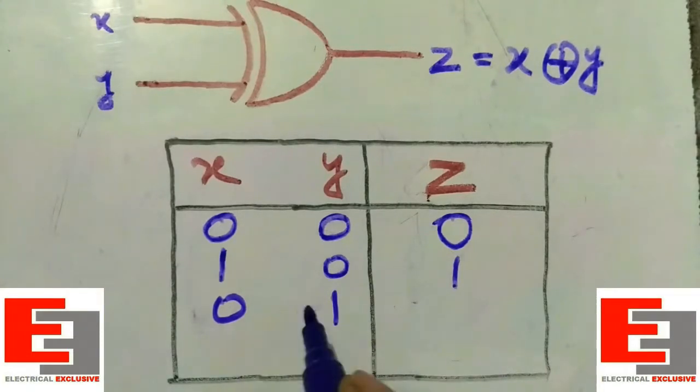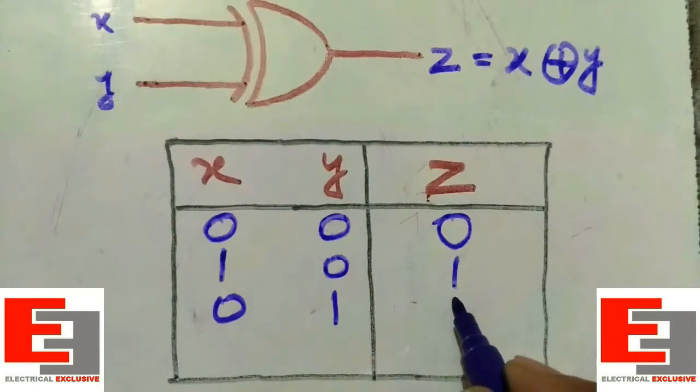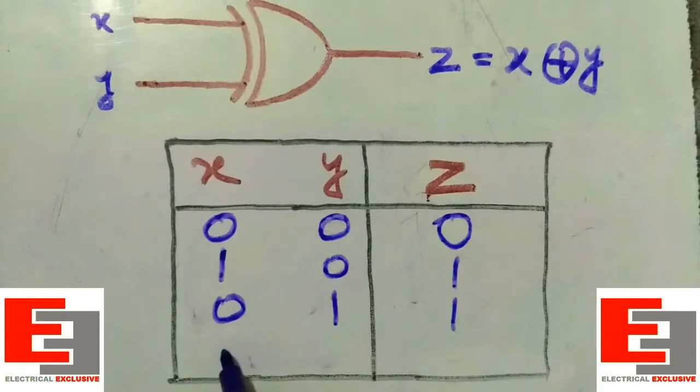If X is zero and Y is one, in this case also both the inputs are not identical, that's why the output will be high, which is one. And if both the inputs are one, for the identical inputs the output is always zero.